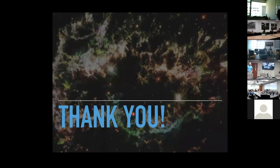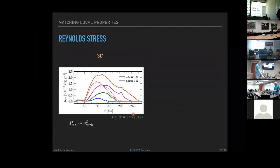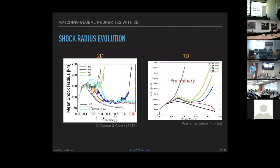During Q&A, a question about why shock radii diverge at a certain time: this is because the convection strength naturally grows with time, with a turn-on time — initially β differences are too small to matter, but as convection grows, solutions diverge. That is where the gain region appears and convection becomes significant.